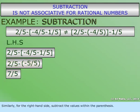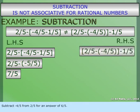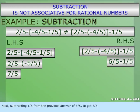Similarly, for the right-hand side, subtract the values within the parentheses. Subtract negative four-fifths from two-fifths for an answer of six-fifths. Next, subtracting one-fifth from the previous answer of six-fifths to get five-fifths.